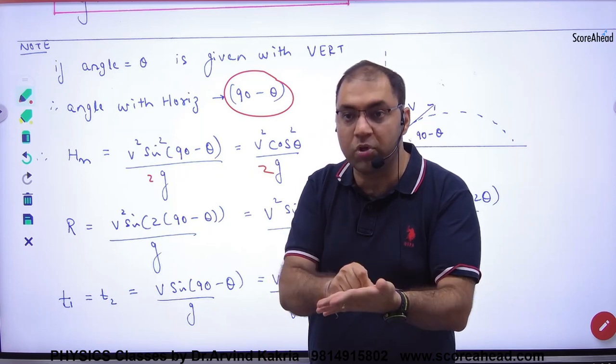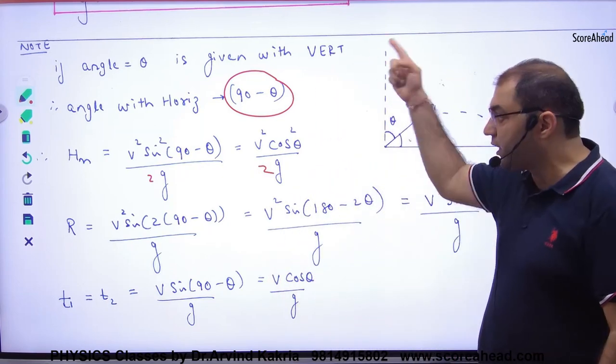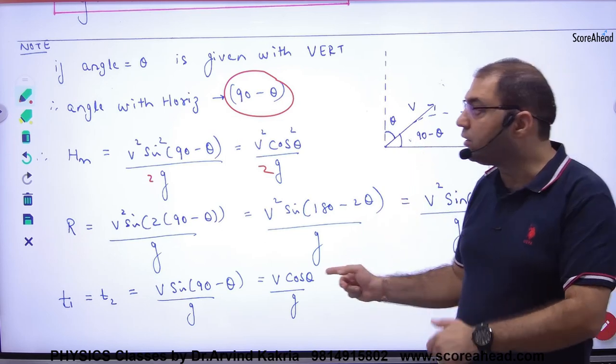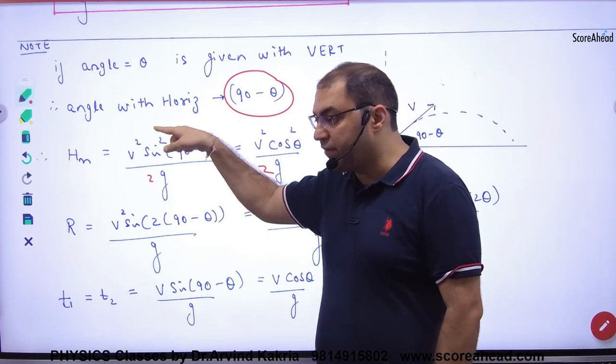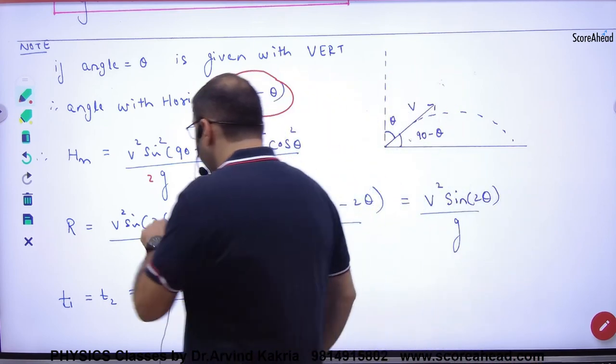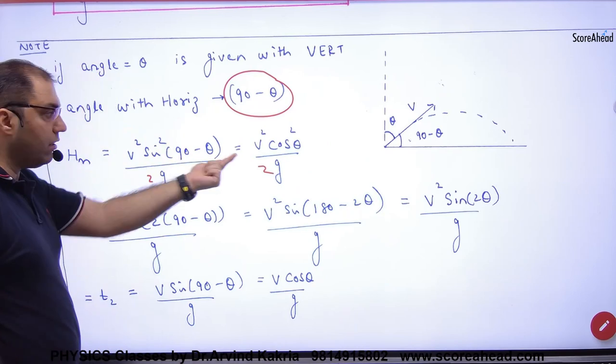In this question, it is given that angle theta is with vertical. So, angle with horizontal will become 90 minus theta. So, we will replace theta with 90 minus theta. So, does the derivation change? How do you do that? In the end, theta becomes 90 minus theta. Maximum height.